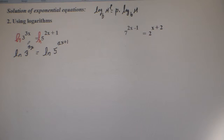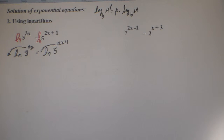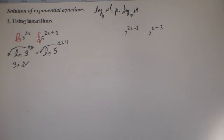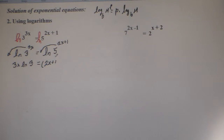Then I will bring the 3x, which is the exponent, to the front of the logarithm multiplying, and we get 3x times the ln of 3 — the natural logarithm of 3 — equals 2x plus 1 in parentheses, because I have two terms — it's a binomial — times the natural logarithm of 5.